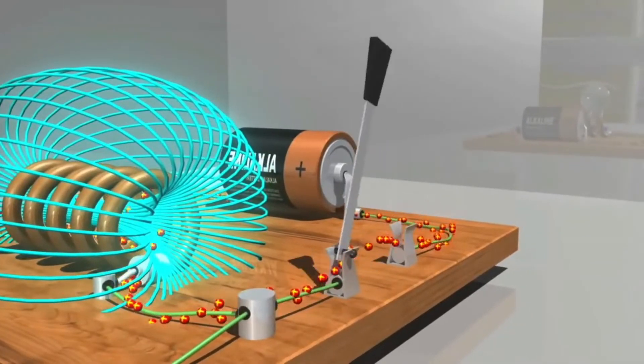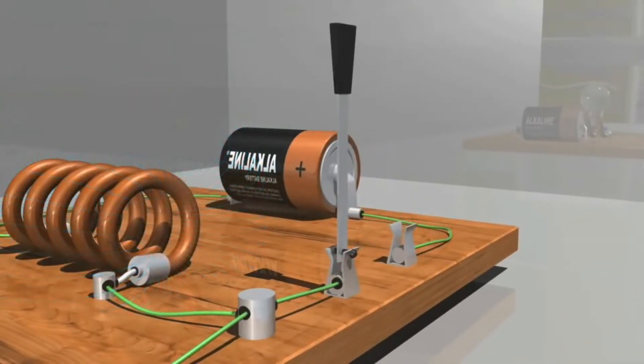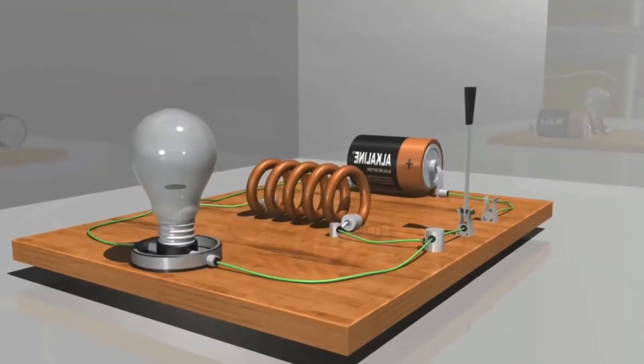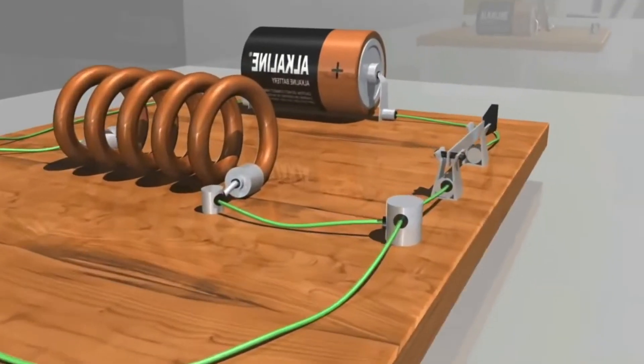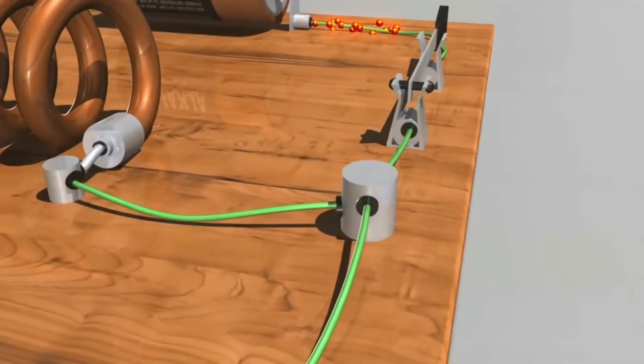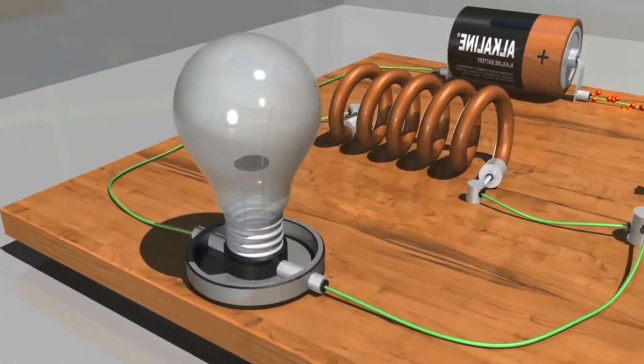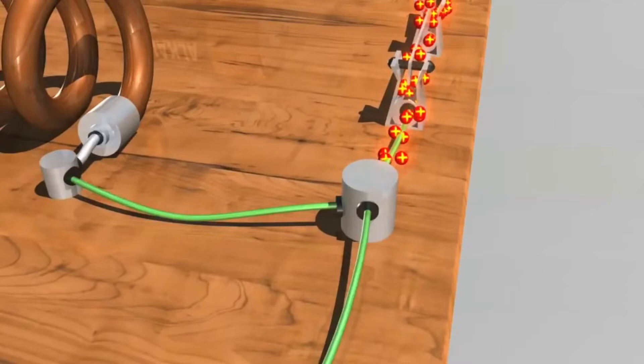Let's watch this again, but this time we'll pay closer attention to what's happening in the wire conductor. In this parallel circuit, the current can travel either through the inductor or through the light bulb. When the current reaches this junction, it splits and flows to both the inductor and to the light bulb.